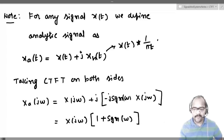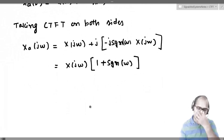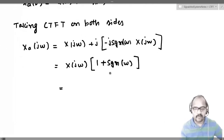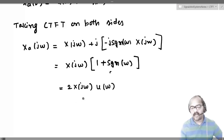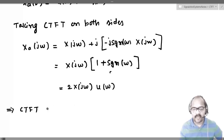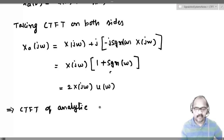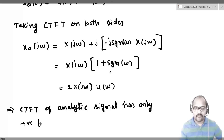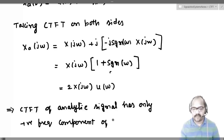The term inside the bracket becomes 1 + sgn(ω). From the first chapter, 1 + sgn(ω) = 2·u(ω). So we get X_a(jω) = 2·X(jω)·u(ω). Multiplying by u(ω) retains only positive frequencies, so the CTFT of the analytic signal has only the positive frequency components of X(jω).